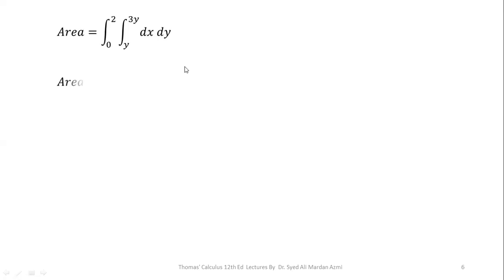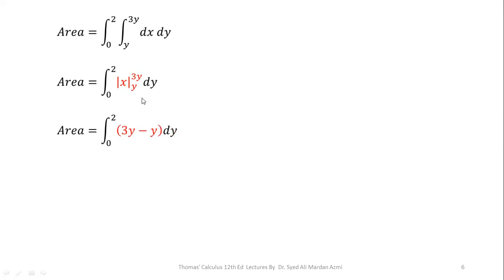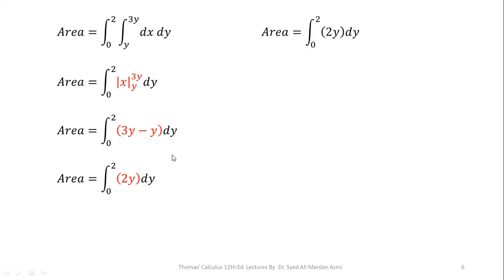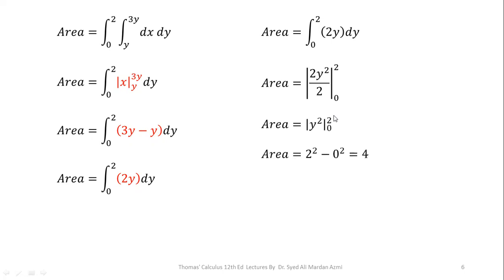In the next step, we evaluate the integral to calculate the shaded area. The integration of dx is x, evaluated from y to 3y. Note that in double integrals, you always solve the inner integral first, then apply the outer integral to the result. Applying the fundamental theorem of calculus (upper limit minus lower limit), we get the integral from 0 to 2 of 2y dy. Integrating 2y with respect to y gives 2y²/2, evaluated from 0 to 2. Simplifying, the 2s cancel and we have y² from 0 to 2. Applying the fundamental theorem again, we substitute y = 2 and y = 0, giving us an area of 4 square units.